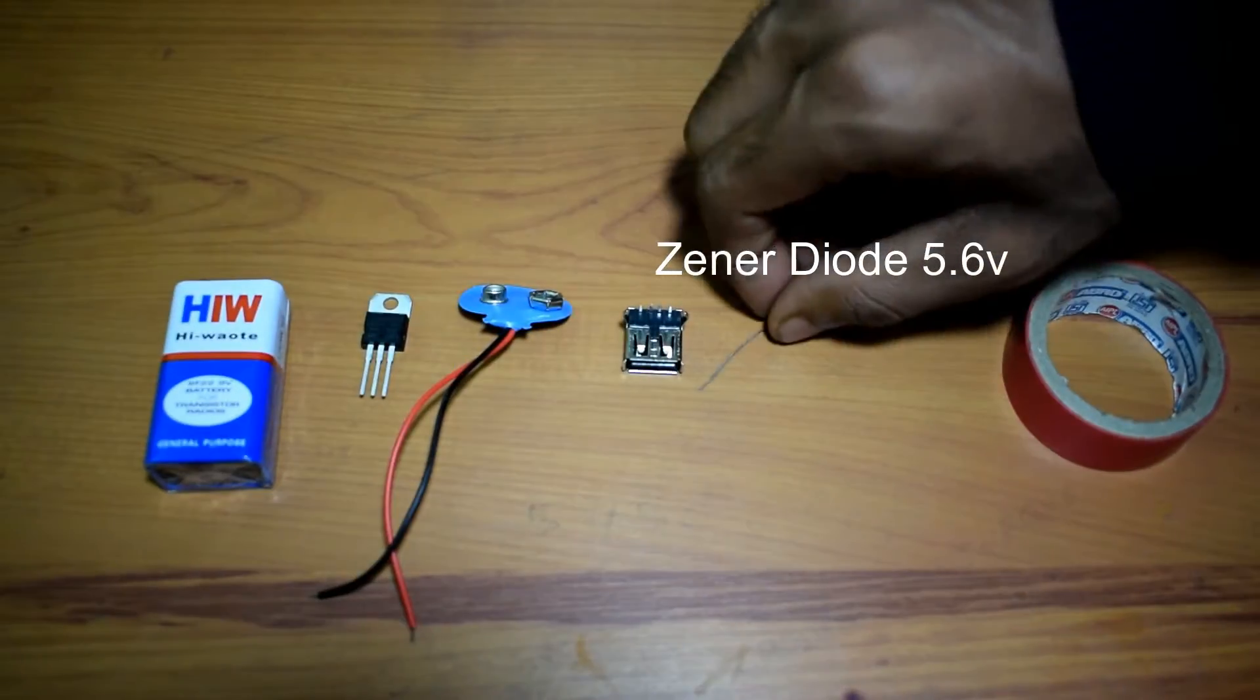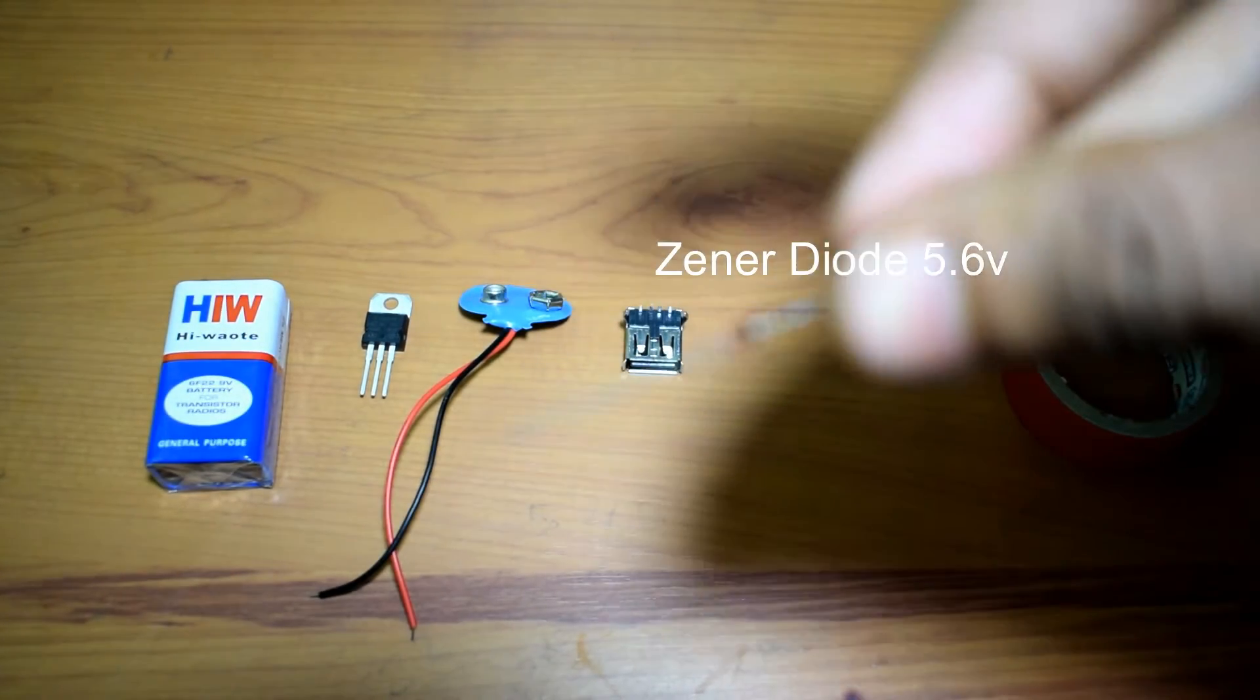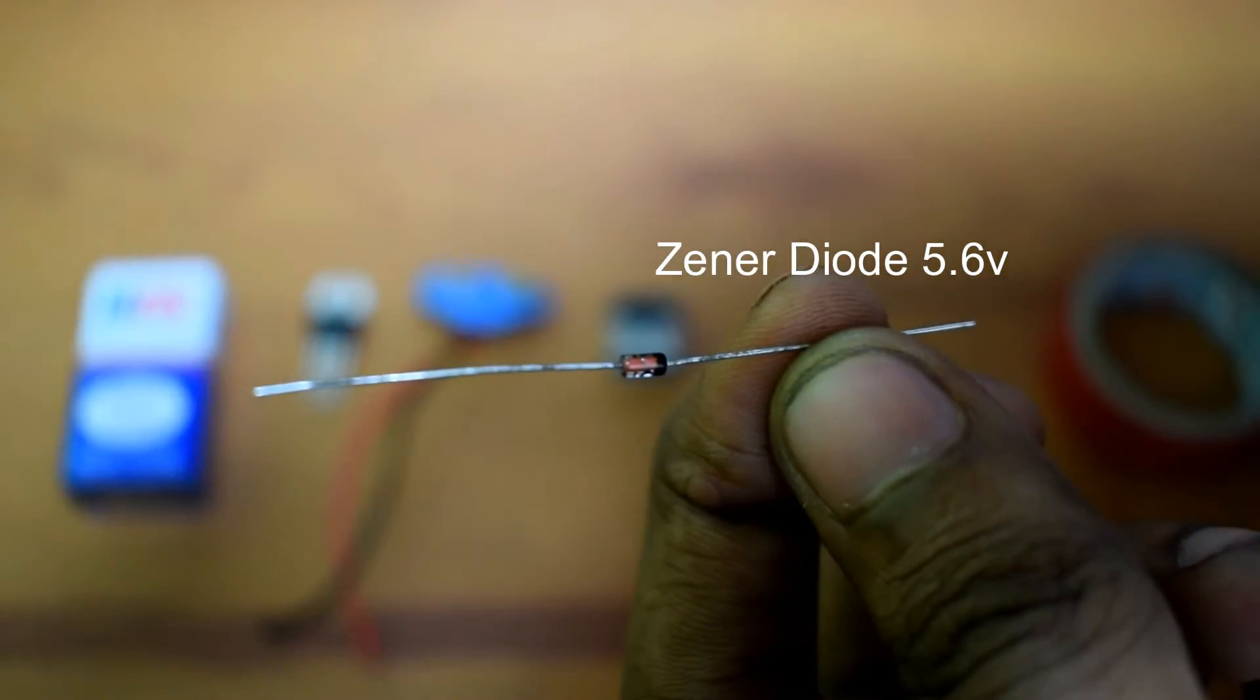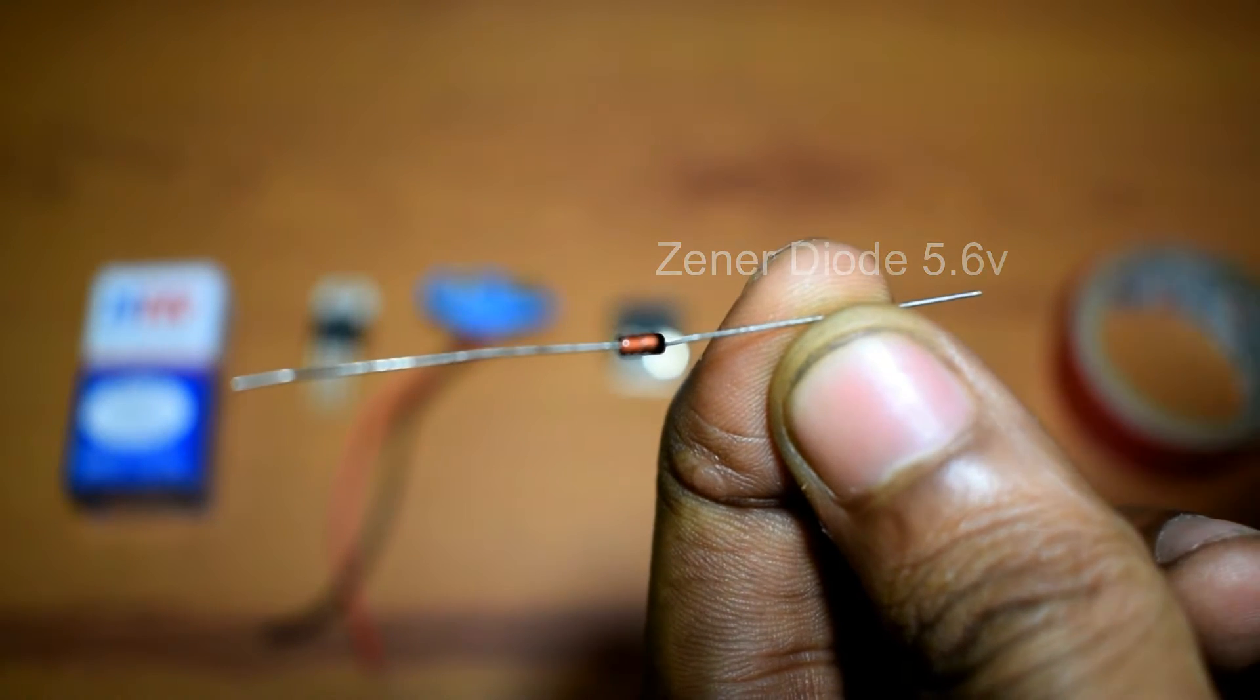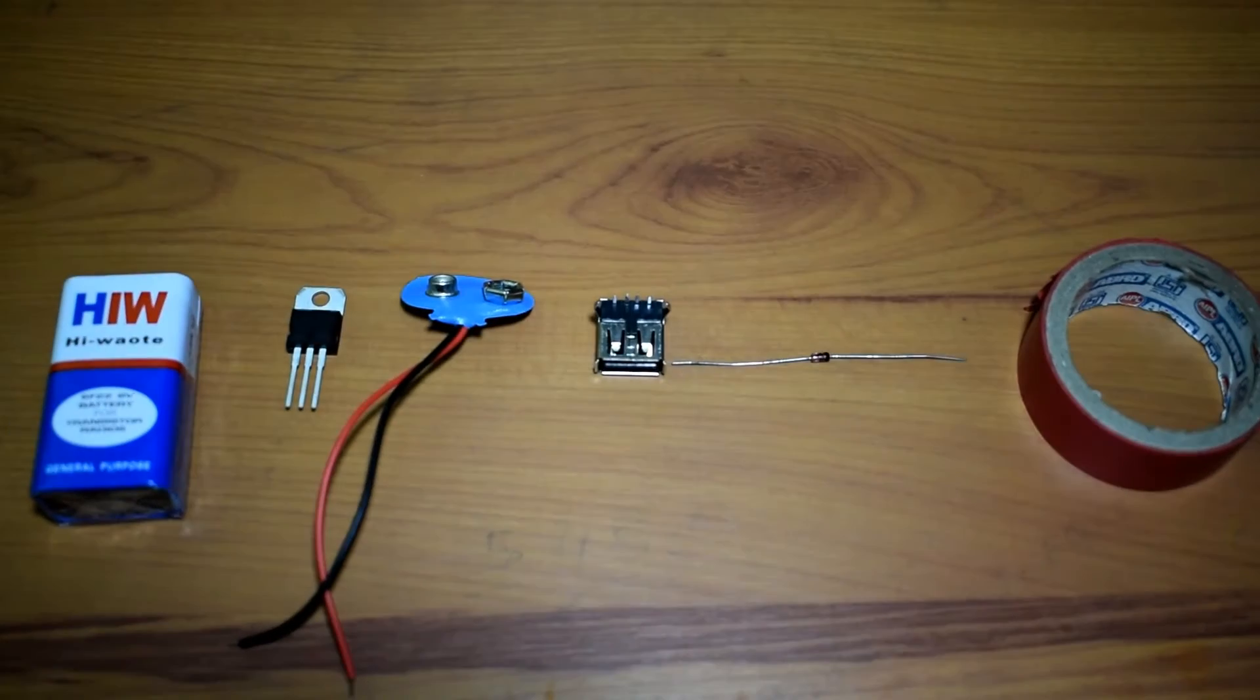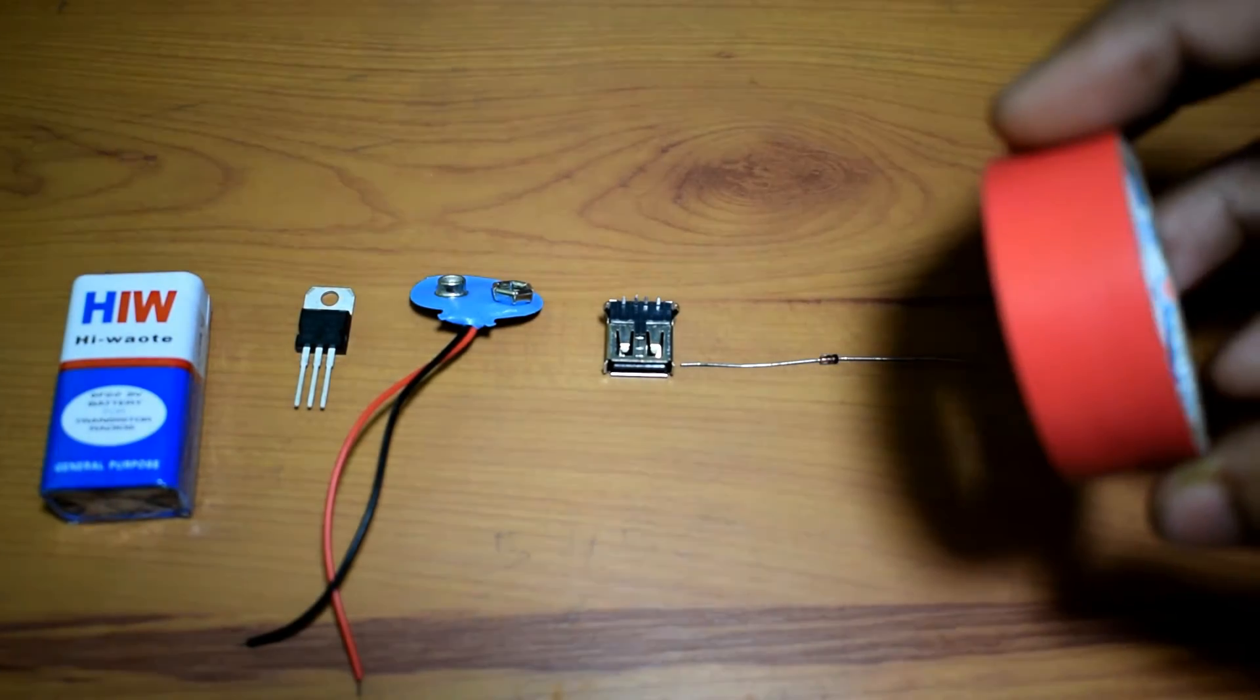A zener diode of 5.6 voltage and some electrical tape. So let us have a look into the circuit diagram and proceed to the next steps.